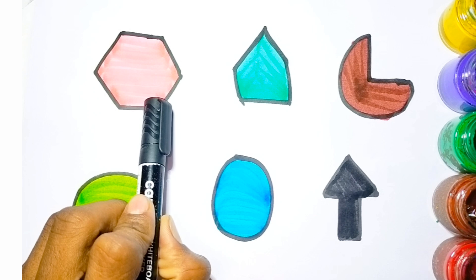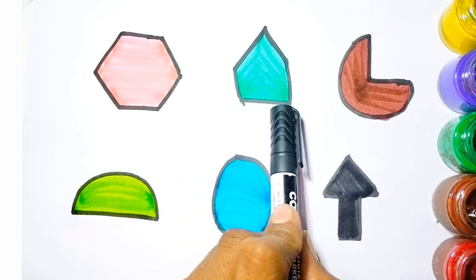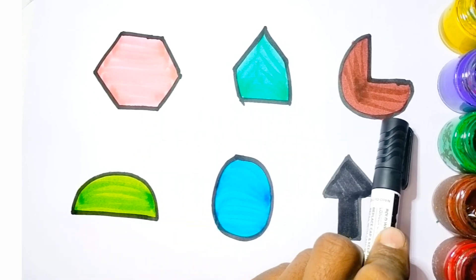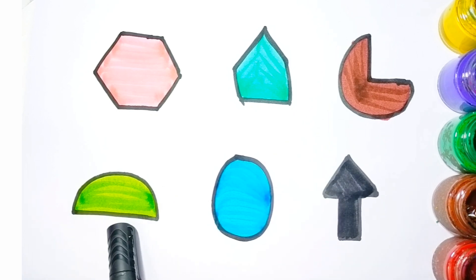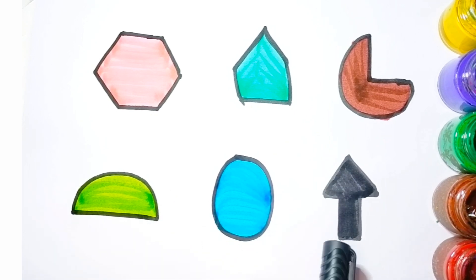Hexagon, pentagon, pie, semicircle, oval, arrow. So...